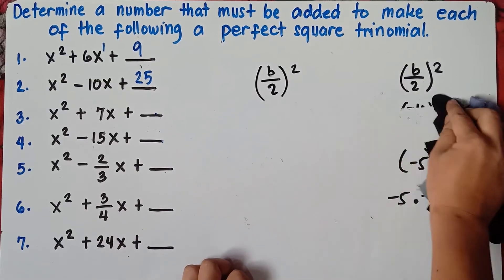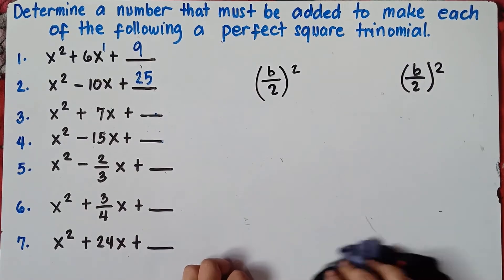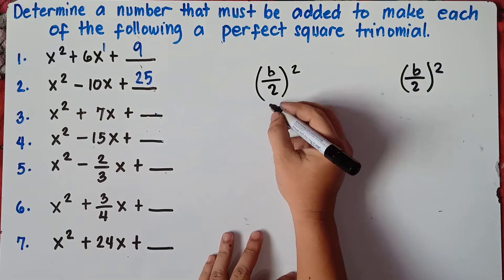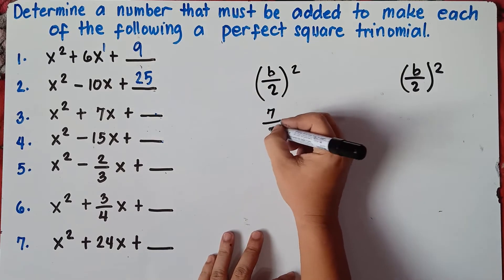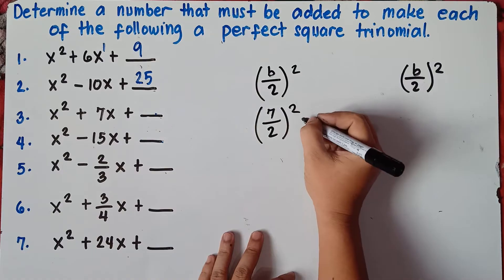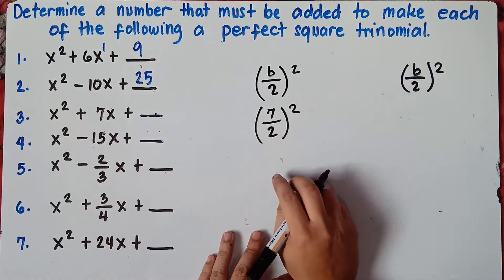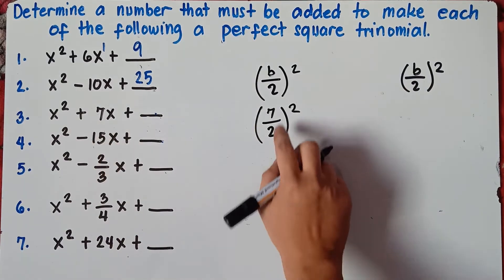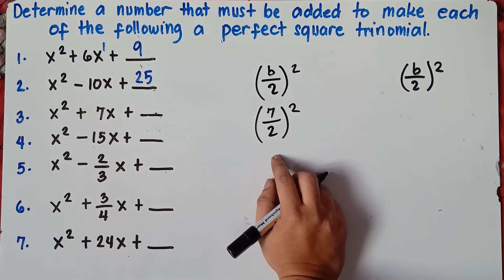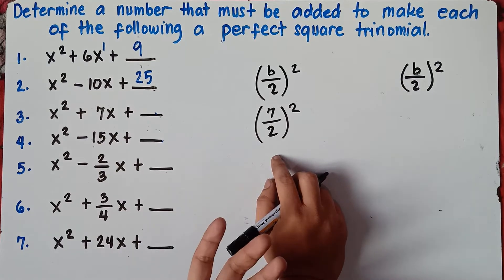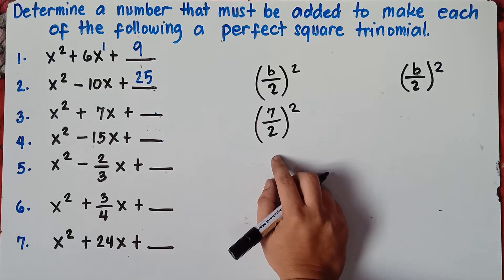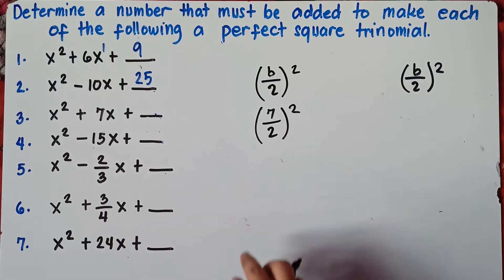Let's try number 3. What if we cannot divide b by 2? For example, b is 7. 7 divided by 2 — we cannot divide evenly because we will get a decimal answer, and we're not allowed to have a decimal answer.